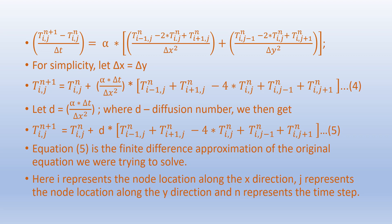For simplicity, let us assume Δx equals Δy. Also, let us define the diffusion number d = α·Δt / Δx². Accordingly, we get Equation 5: T[i,j]^(n+1) = T[i,j]^n + d × (T[i-1,j]^n + T[i+1,j]^n - 4·T[i,j]^n + T[i,j-1]^n + T[i,j+1]^n).